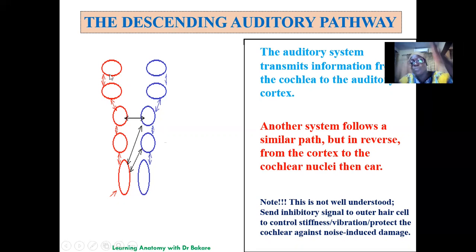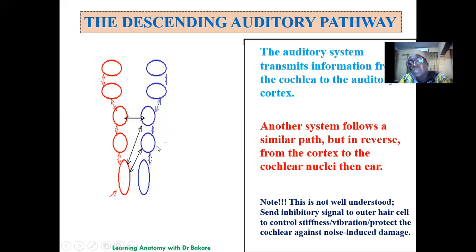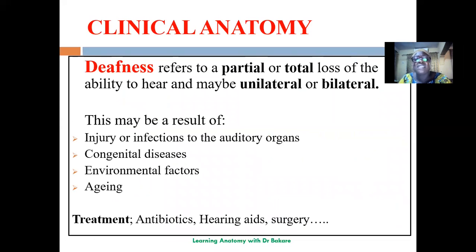We also have a descending auditory pathway. This pathway is not well understood, but it is assumed to follow a similar pattern to the ascending pathway in reverse. The function of the descending auditory pathway is to send inhibitory signals to the hair cells — the cells specifically responsible for generating neural impulses — helping to control their activity and protect them against noise-induced damage or other forms of damage.